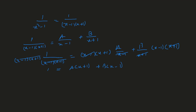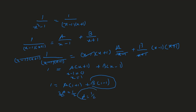The third step is the zero method. Take the first factor, x − 1, set it equal to zero, so x = 1, and substitute into the equation. We get 1 = A(1 + 1) + B(1 − 1). The B term cancels out, leaving 1 = 2A, so A = 1/2.